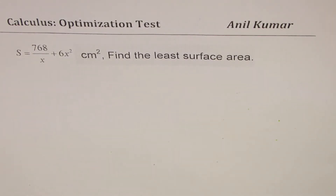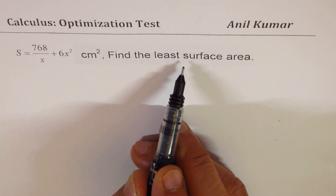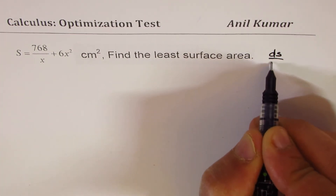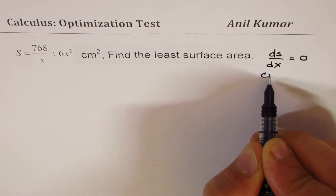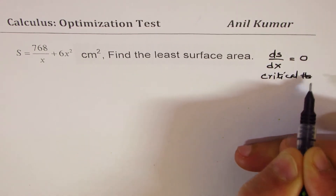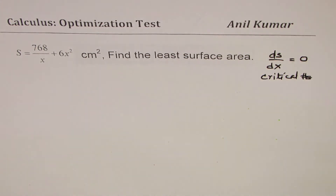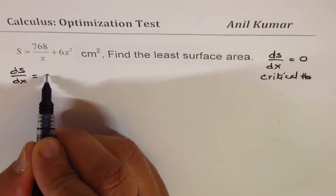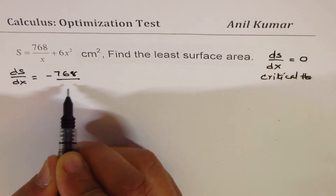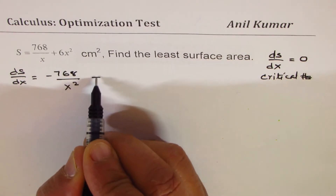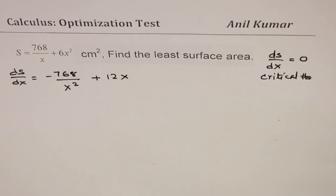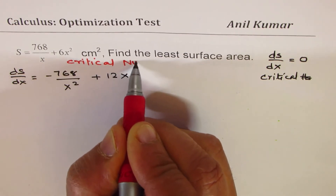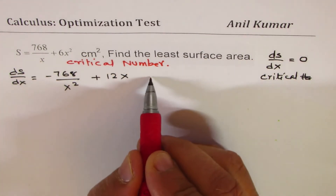Let's do the next part involving calculus where we will find the least surface area. To find the least surface area, we differentiate the surface area with respect to x and equate it to zero to find critical numbers, then we analyze those critical numbers. Differentiating with respect to x: dS/dx = −768/x² + 12x. We can rewrite this as (12x³ − 768)/x².